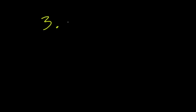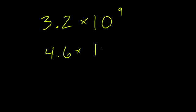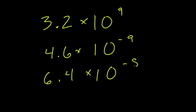Here we're comparing numbers in scientific notation. Let's say we have a list of numbers and talk about a strategy for doing this: 3.2 times 10 to the 9th, 4.6 times 10 to the negative 9th, 6.4 times 10 to the negative 8th, and 1.3 times 10 to the positive 8th.